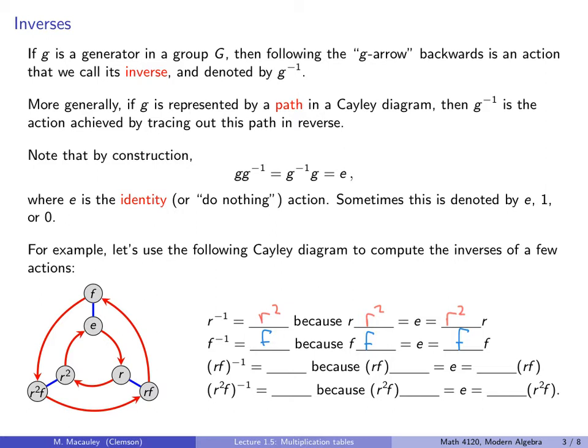What about RF? If we start here and we do RF, how do we get back to where we started? Do RF again. So RF inverse is RF, because RF times RF is the identity, and again trivially, if we swap the order, it's the same thing.